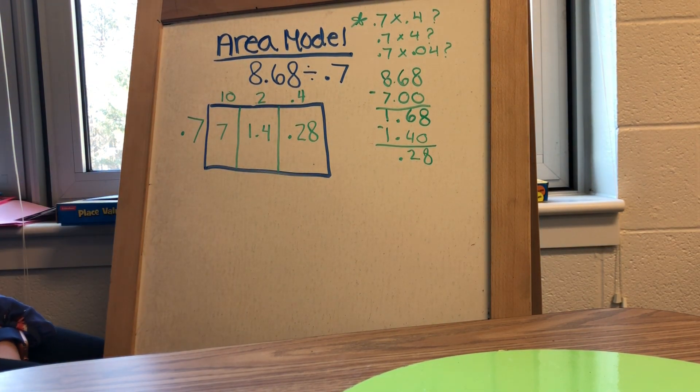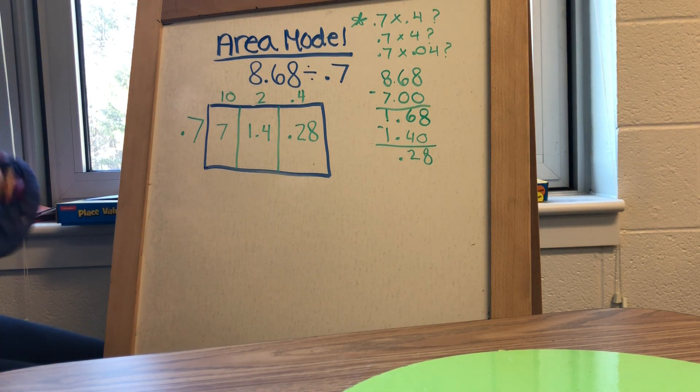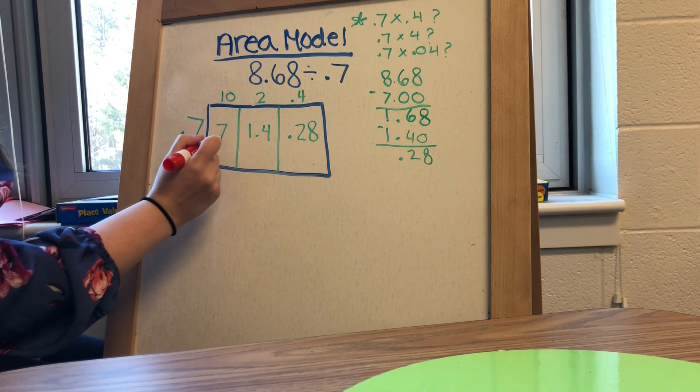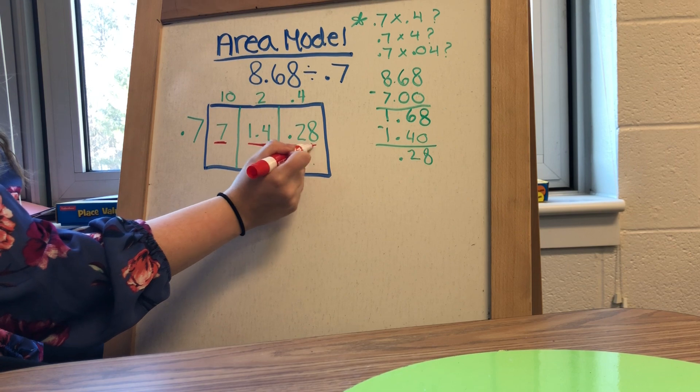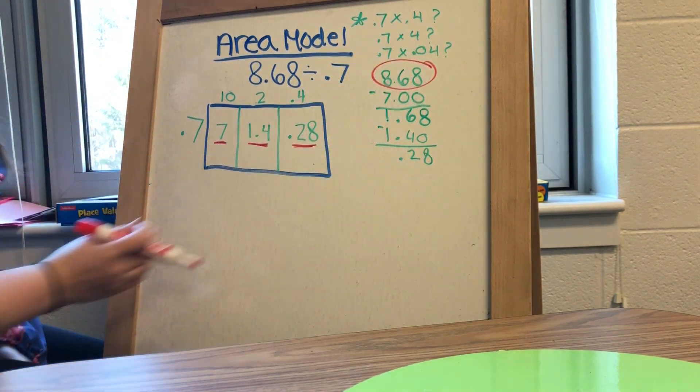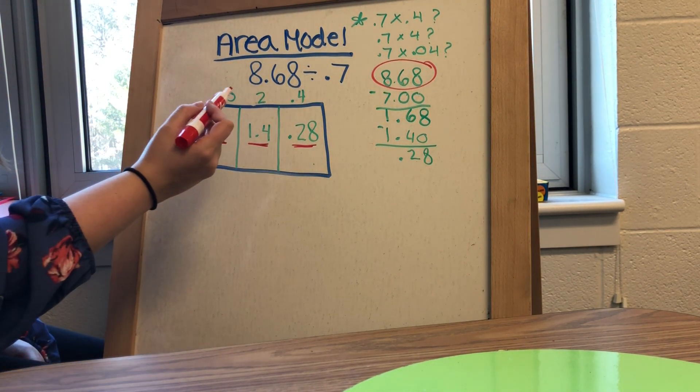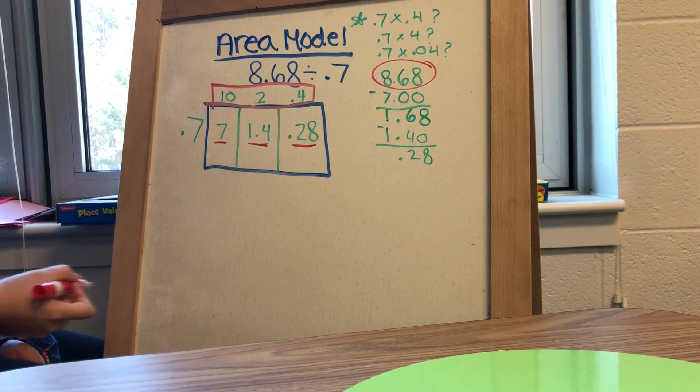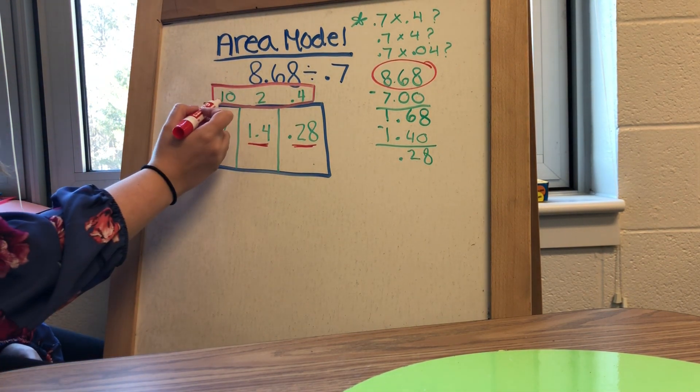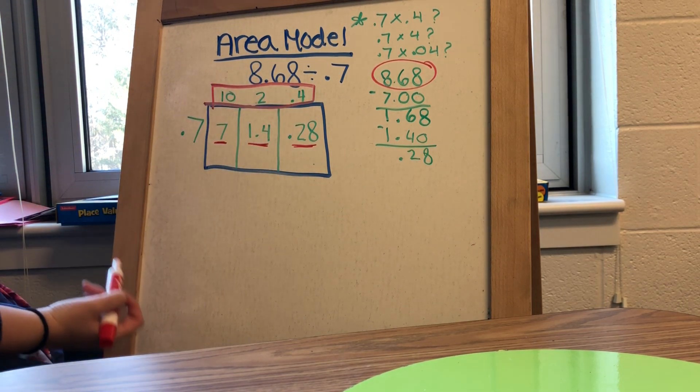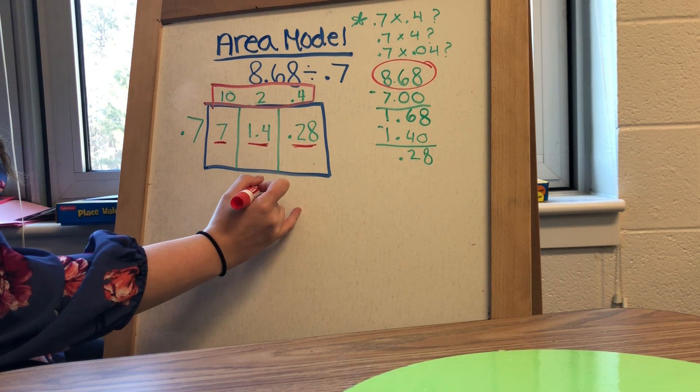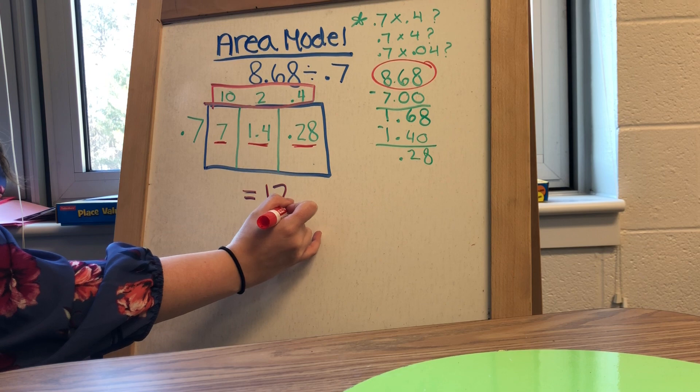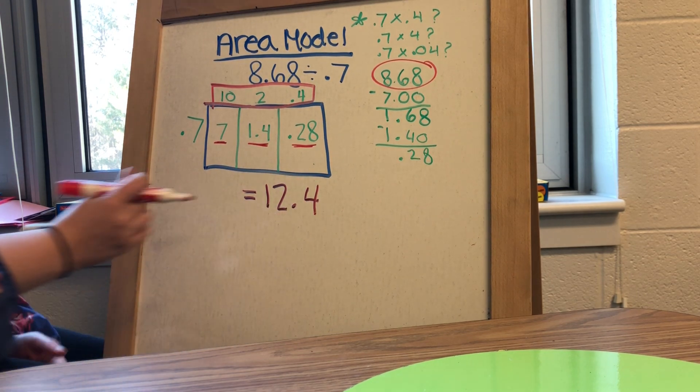And then from here, I could gather my answer. So again, these three numbers inside the box are going to equal our dividend. Our answer is actually going to come from the numbers on top of the box added up. So 10 plus 2 plus 4 tenths is going to be 12 and 4 tenths.